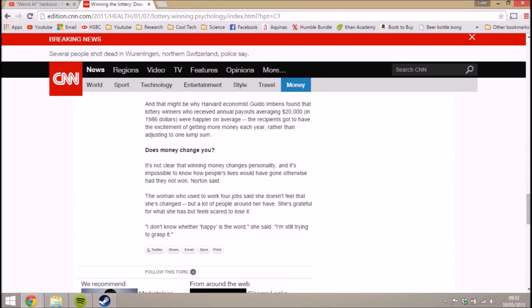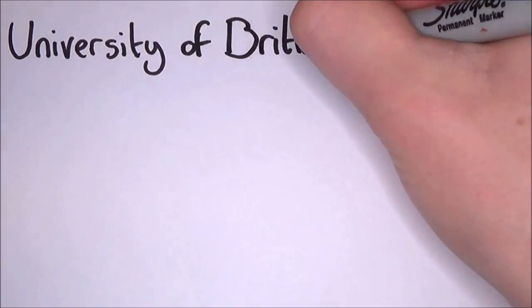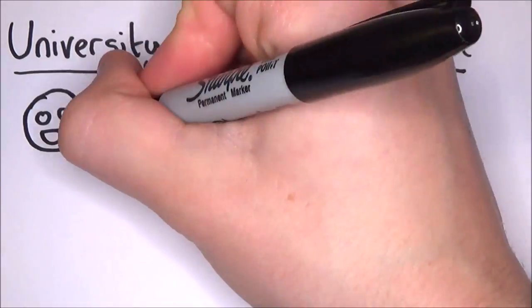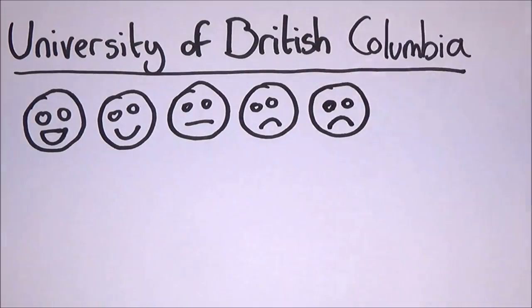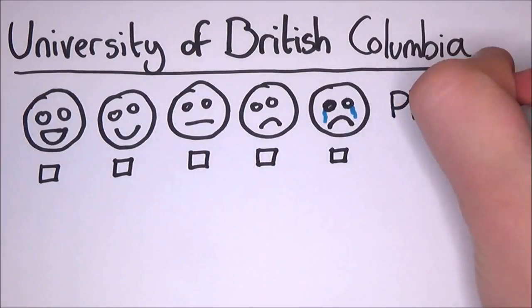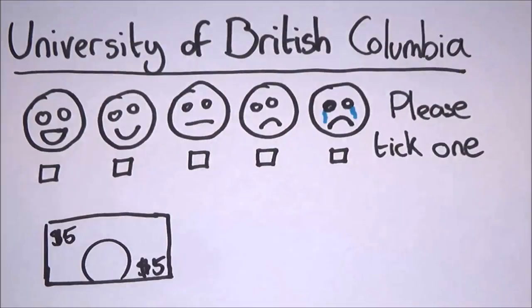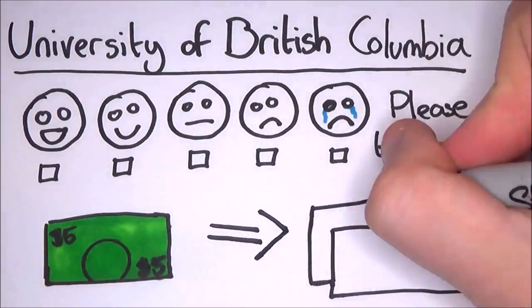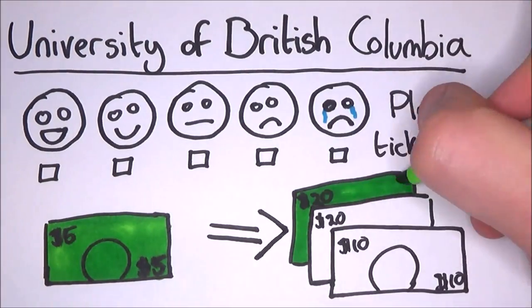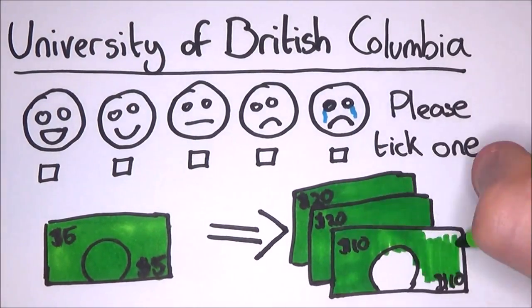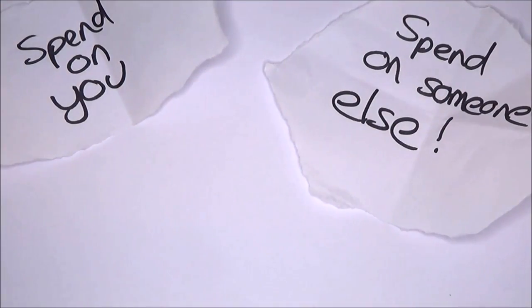Keep this in mind as we move to an experiment done in the University of British Columbia in Vancouver. First, they measured the happiness of participants. No idea how you would even do that. But then they gave everyone a random amount of money, from $5 to $50 and a bit of paper. The paper had an instruction on it. It said either, buy something nice for yourself or buy something nice for someone else.